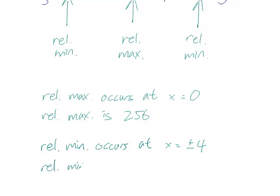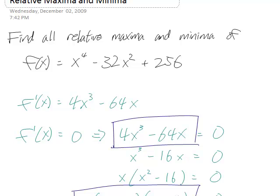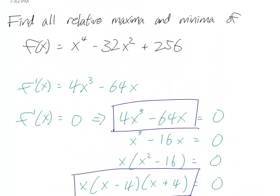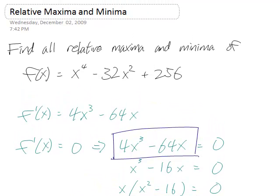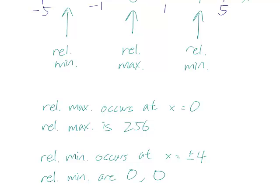And then we have the relative minimum occurs at x equals plus or minus 4. And the relative minimums themselves are, let's plug in minus 4. Minus 4 to the 4th is 256. And then that's 256 minus, well, that's 32 times 16. So that's twice 256, 512. And then so you have 256 minus 512 plus 256. I believe that is actually 0. And when you plug in positive 4, you get the exact same thing. This is an even function, right? All the powers are even, so positive and negative x values give you the same y value. So the relative minimum is 0. And these points are the relative max and mins of this function.